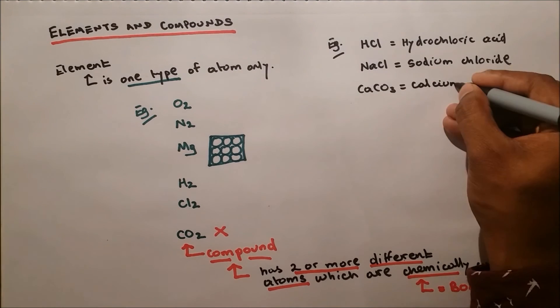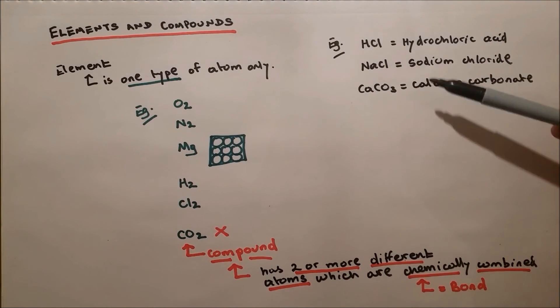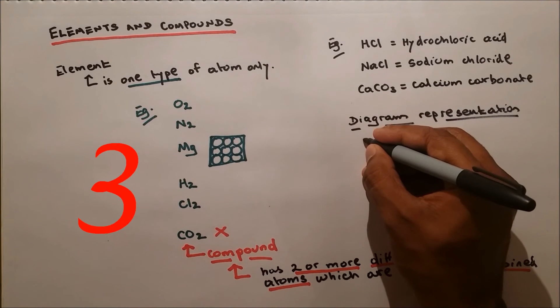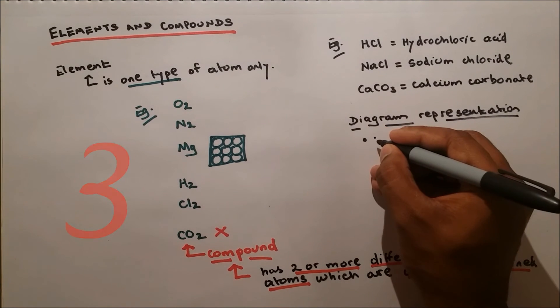Diagram representation. Let's say a small dot over here is a different atom, and this one is a larger atom. So they're both different. These two atoms are chemically combined and they belong to the same atom, so this is going to be an element.